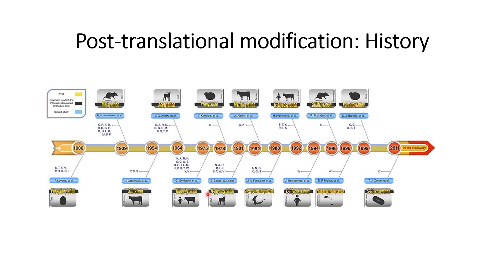Another example is the expression of CD44, which is also the result of a change in glycosylation pattern. CD44 is a known biomarker, or marker, for cancer cells.